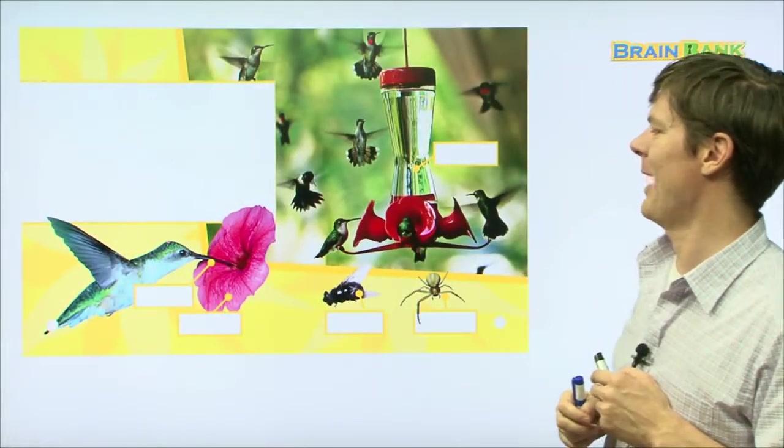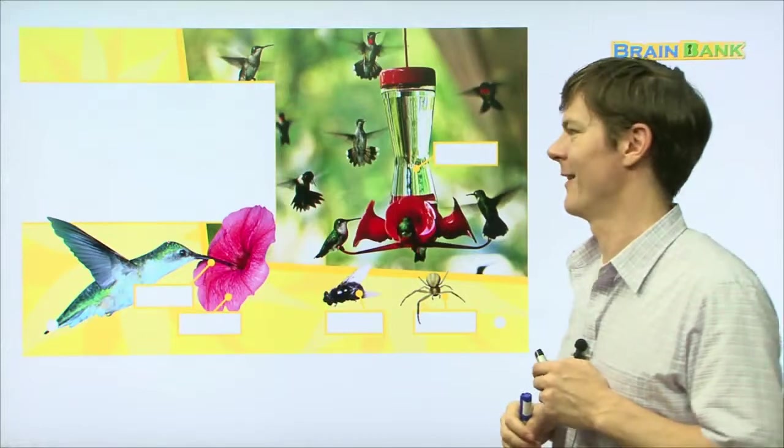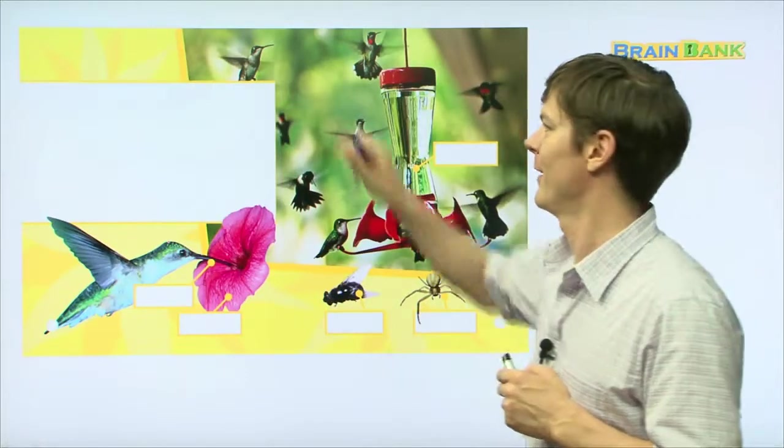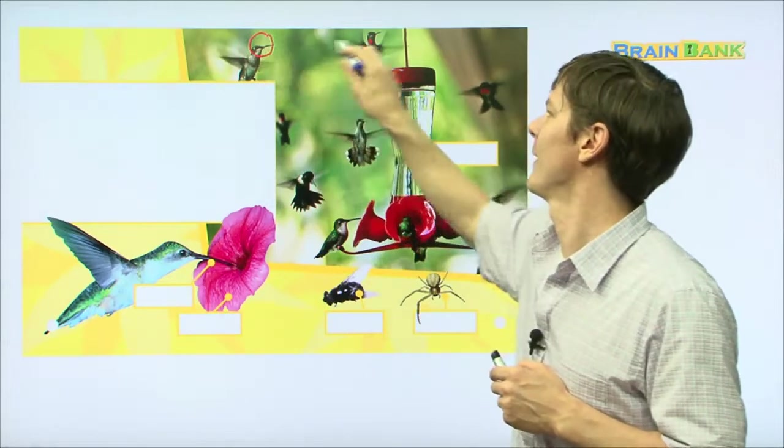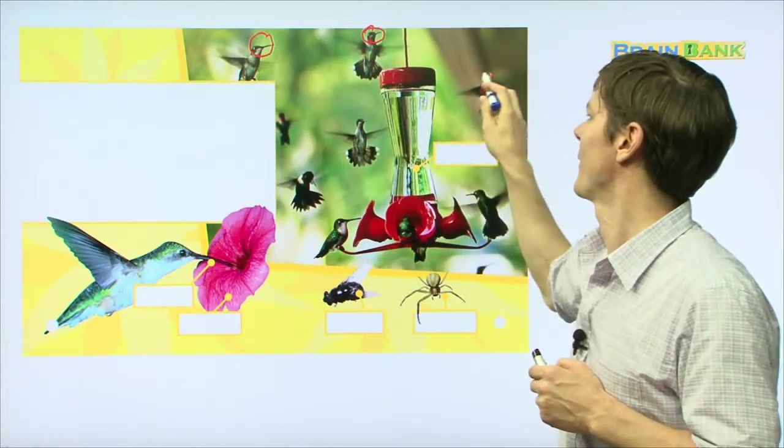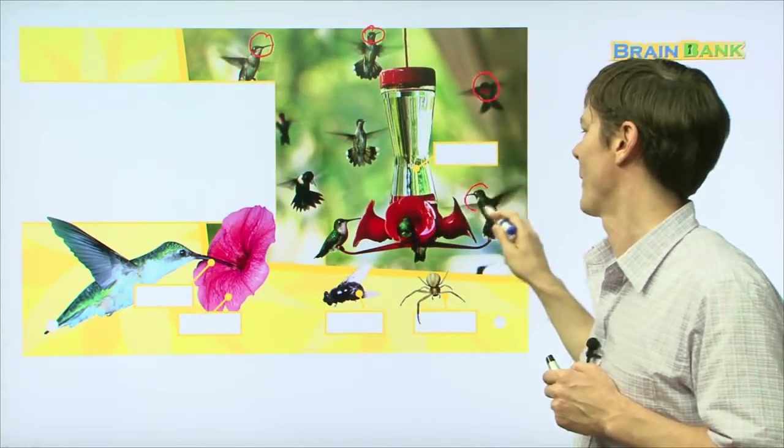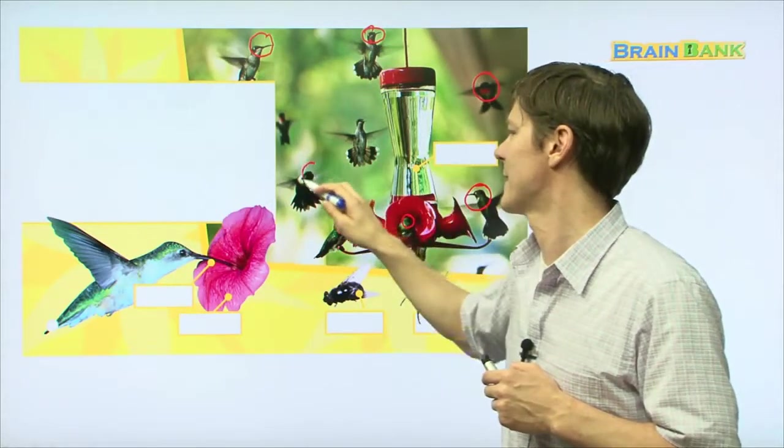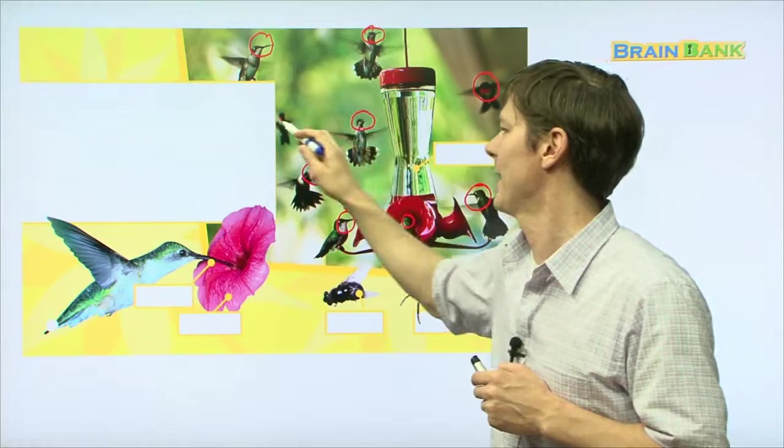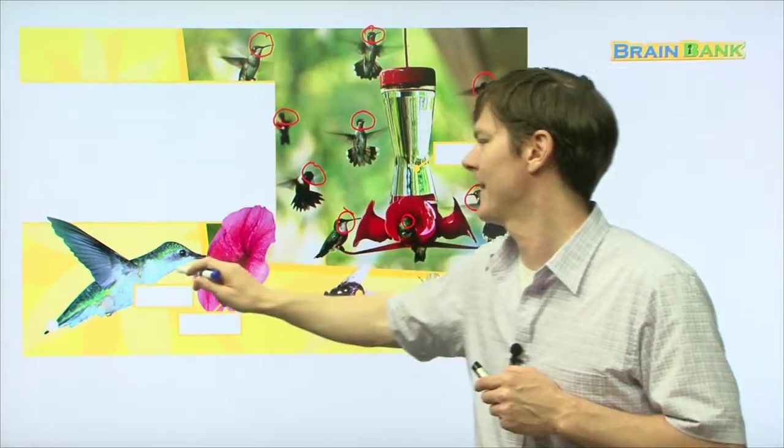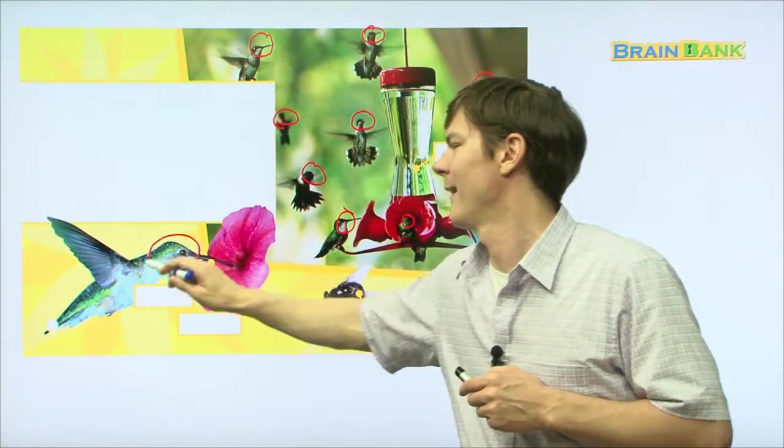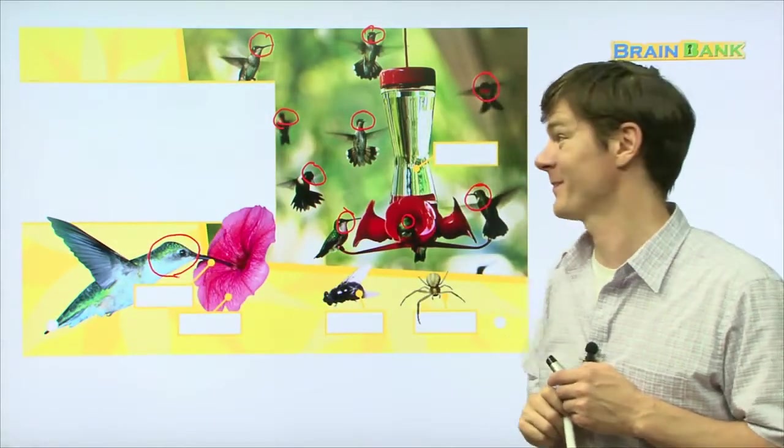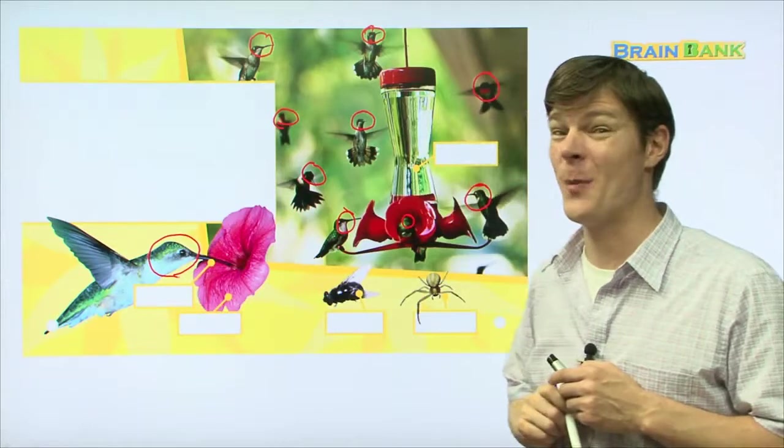Now look at this picture. There's a lot going on here. I see a lot of hummingbirds. How about we count them together? So here's one, two, three, four, five, six, seven, eight, nine, and ten. Wow, there are ten hummingbirds on this picture. In this picture, there are so many.